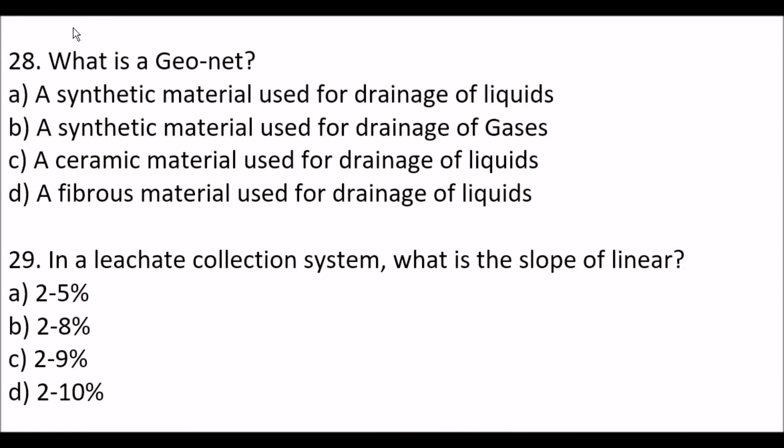Next question: what is a geonet? This is a very important question. Option A, a synthetic material used for drainage of liquids; option B, a synthetic material used for drainage of gases; option C, an academic material used for drainage of liquids; option D, a fibrous material used for drainage of liquids. Right answer is option A, a synthetic material used for drainage of liquids.